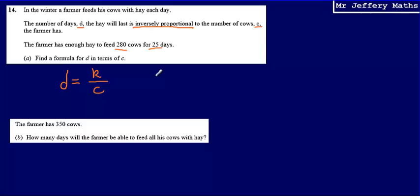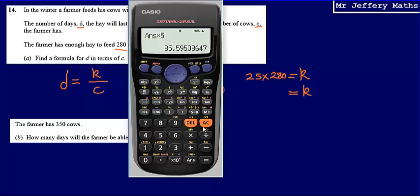I'm told that the farmer has enough hay to feed 280 cows for 25 days. So substituting in these two values leaves me with D equals 25. So 25 days equals a number, which I'm trying to work out for my formula, divided by 280, the number of cows. So 25 equals K over 280, which means that K must be equal to 25 times 280, which gives me 7,000.